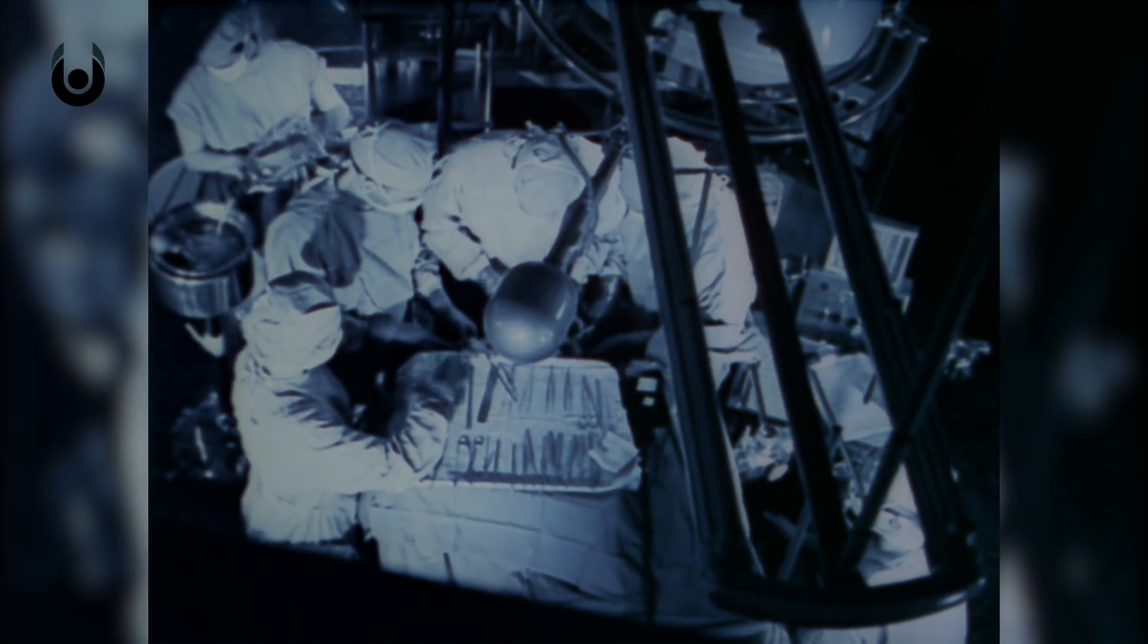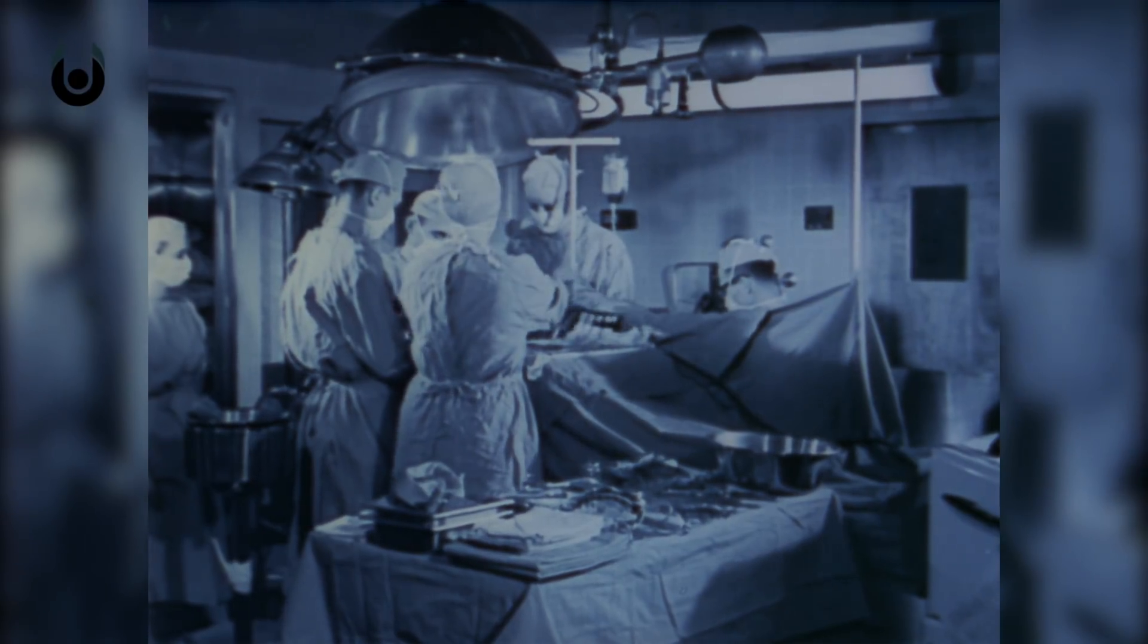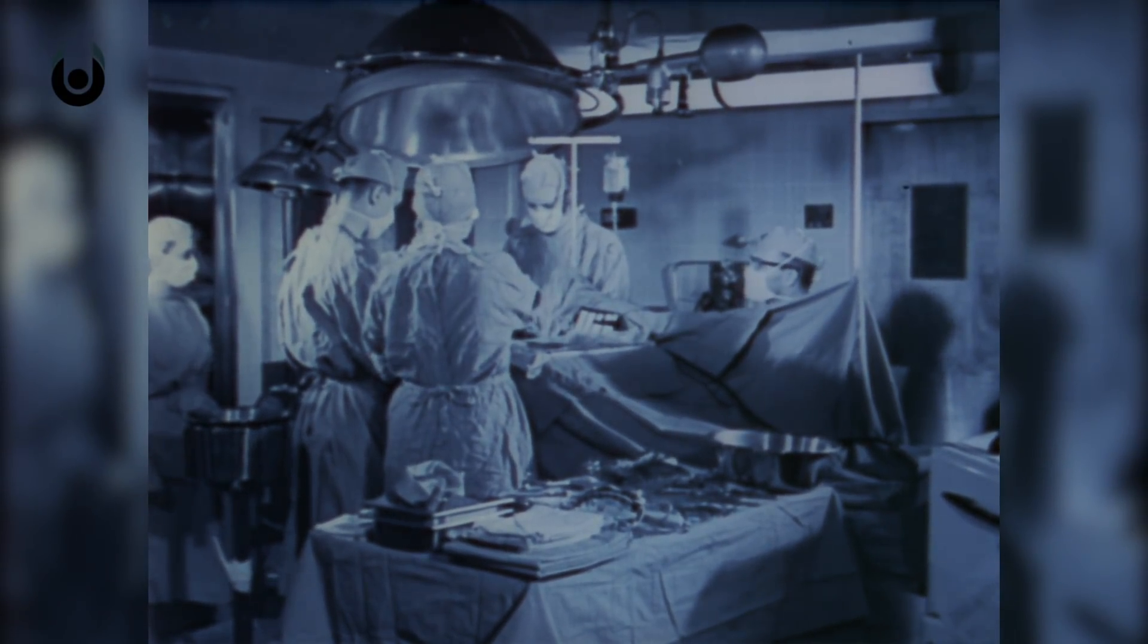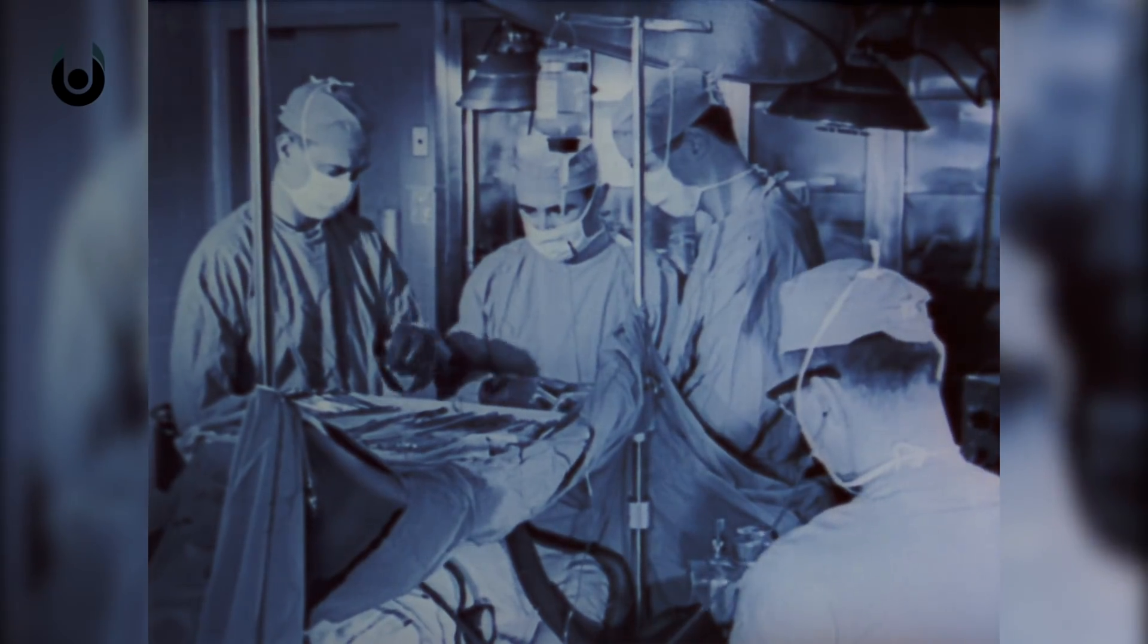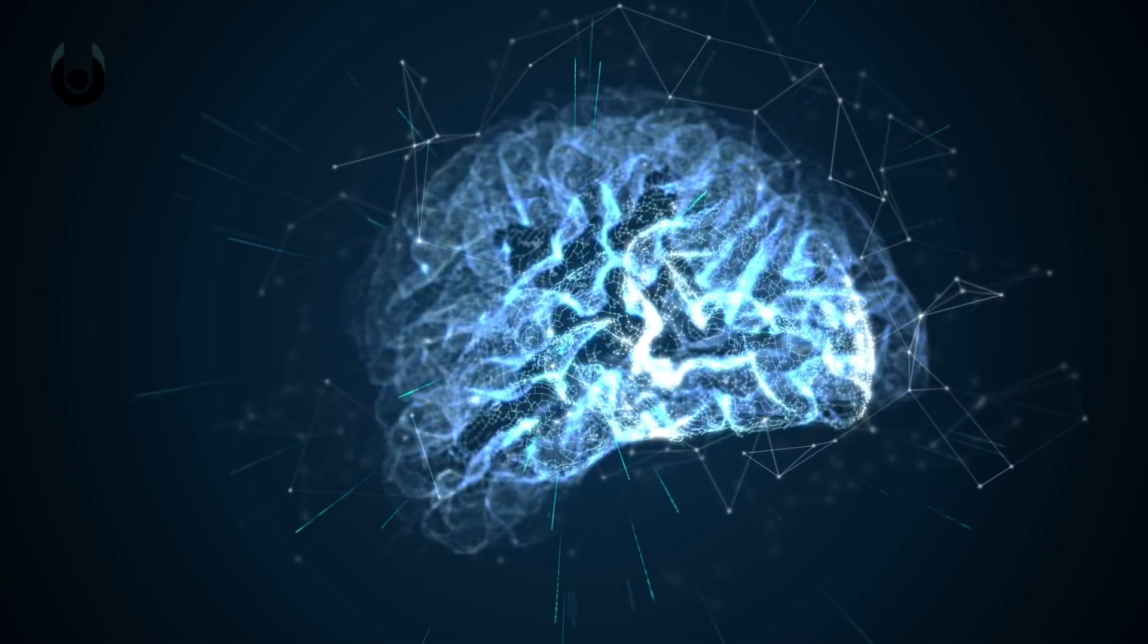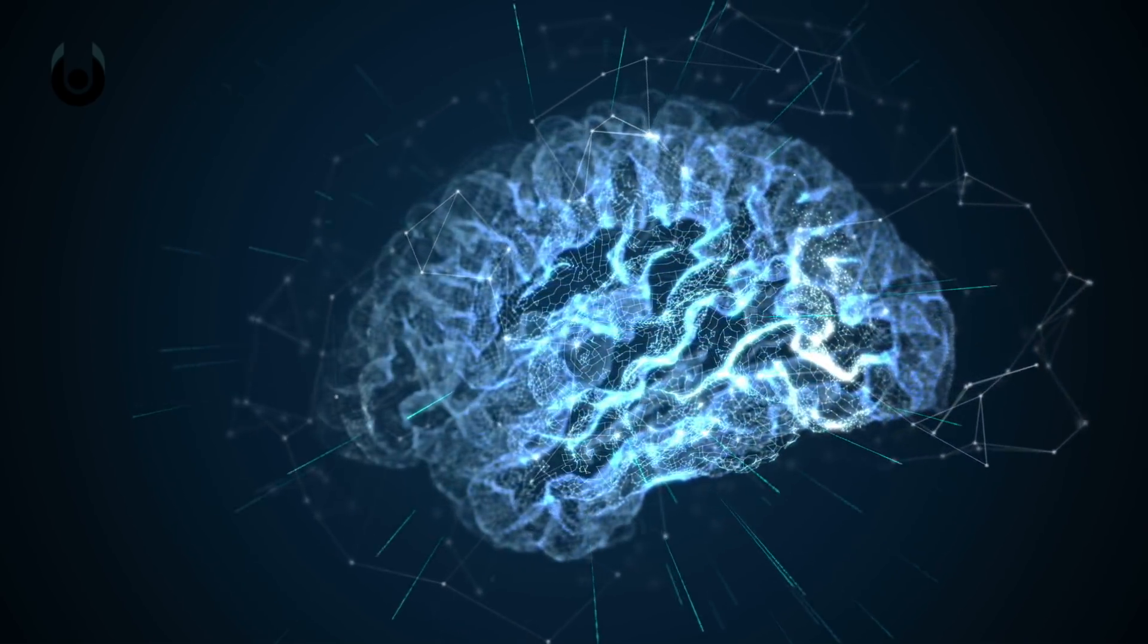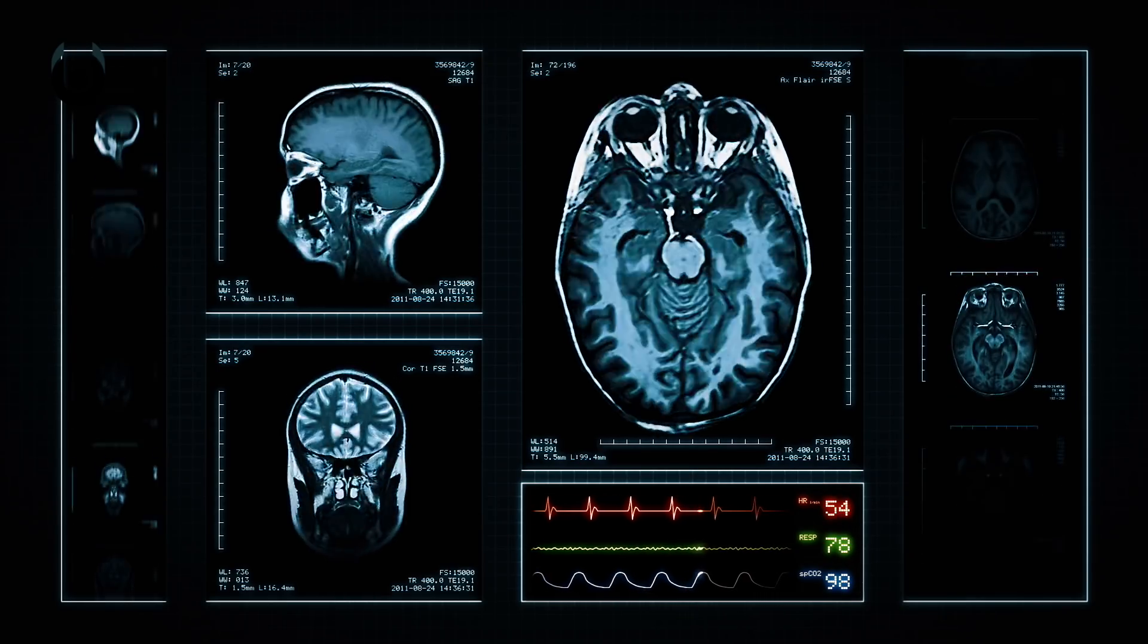Of course, brain transplants have long played a role in speculative fiction, notably since Mary Shelley's Frankenstein was published in 1818. In film, 1962's The Brain That Wouldn't Die took the transplant story further, with its tale of a troubled doctor committing murder to provide his wife with a new body, having kept her disembodied head alive in his lab.